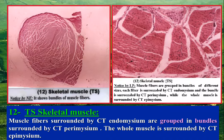The bundle is surrounded by connective tissue called perimysium, while the whole muscle is surrounded by connective tissue called epimysium.